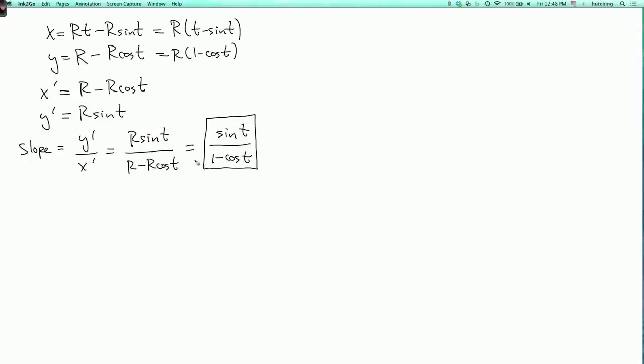Now what happens at t equals 0? Well at t equals 0, this is not defined, because the denominator is 0. We could ask, what is the limit as t goes to 0? So the limit as t goes to 0 of the slope is the limit as t goes to 0 of sine t over 1 minus cosine t.